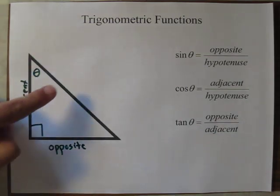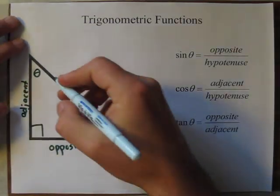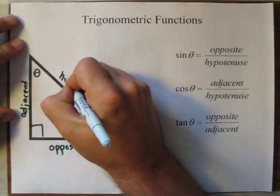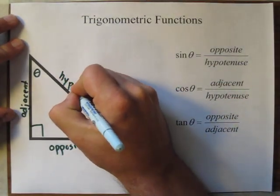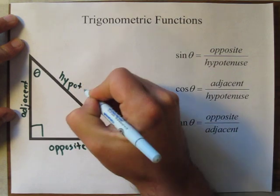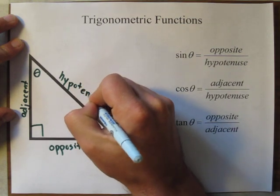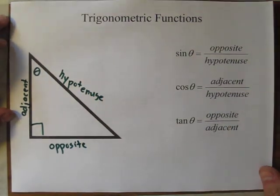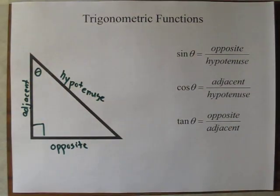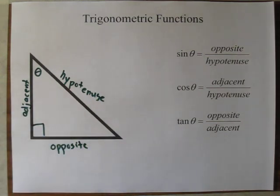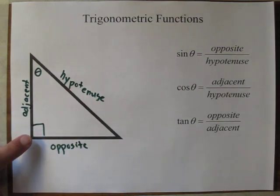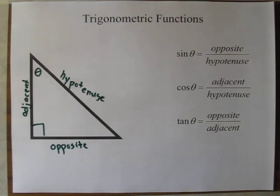And finally, the longest side is the hypotenuse. You may be thinking, how do we tell the difference between the adjacent side and the hypotenuse? Well, the hypotenuse is always opposite the right angle in a right triangle.